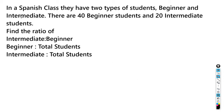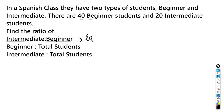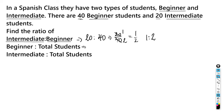In a Spanish class there are two types of students: beginner and intermediate. There are 40 beginner students and 20 intermediate students. Find the ratio of intermediate to beginner: that's 20 to 40, or 20 over 40. Since 20 goes into 40 twice, this simplifies to 1 to 2.